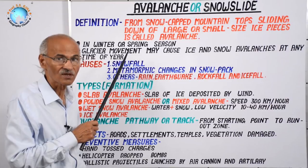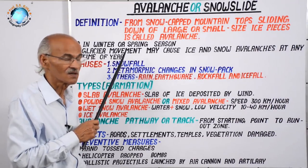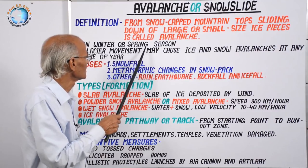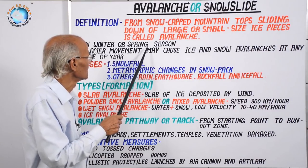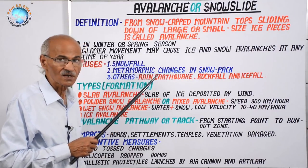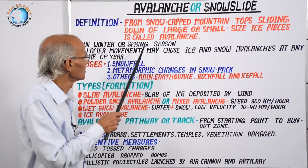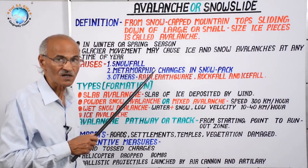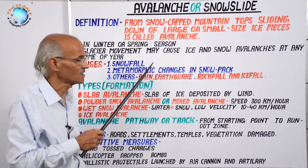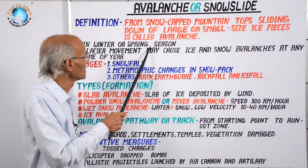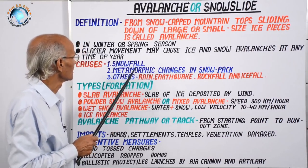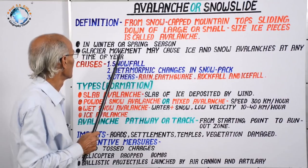You can observe these incidents over the Himalayas during December and January. Sometimes avalanche also takes place in spring season because after winter, spring comes and sometimes late snowfall occurs in spring, which is why spring also records avalanche.